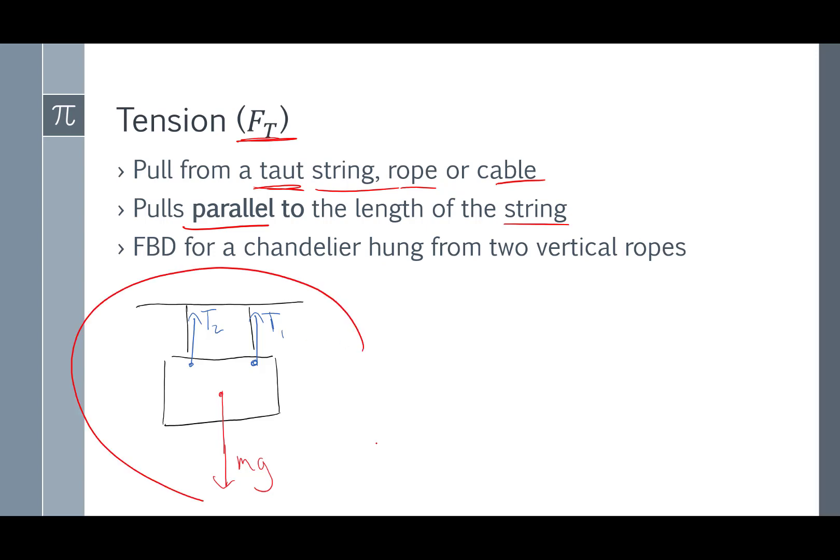So here's a free body diagram for a chandelier hung from two vertical ropes. Notice gravity pulls straight down, and each rope pulls up with a tension force. And that tension force is in the direction of the strings, which are straight up. If I had a chandelier hanging from two angled strings, then my free body diagram would look like this: gravity pulling down, two tensions pulling at angles.